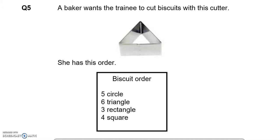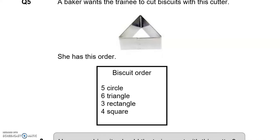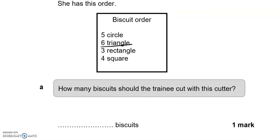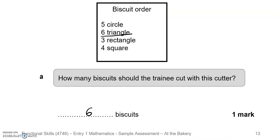A baker wants a trainee to cut biscuits with this cutter. She has this order: biscuit order, 5 circle, 6 triangle, 3 rectangle, 4 square. How many biscuits should the trainee cut with this cutter? As this is a triangular shape, 6 triangle ones, so 6 biscuits.